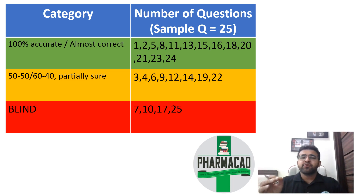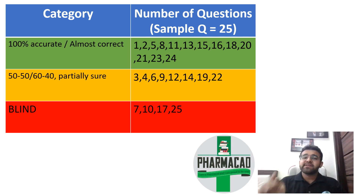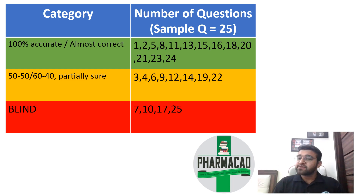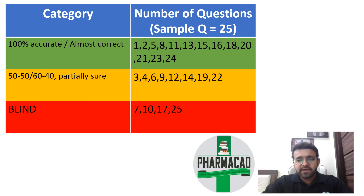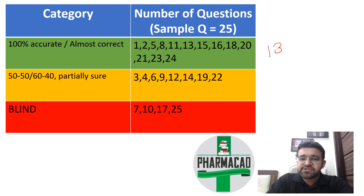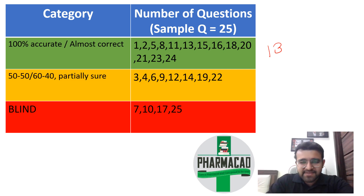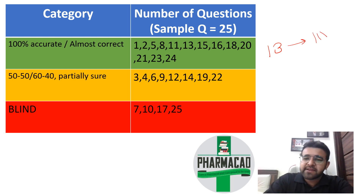When you submit the paper and get the answers, you will see how many marks you scored. For example, you might think you have 30 questions that you are 100% sure about, then you will see that out of those 30, maybe only 11 are right.